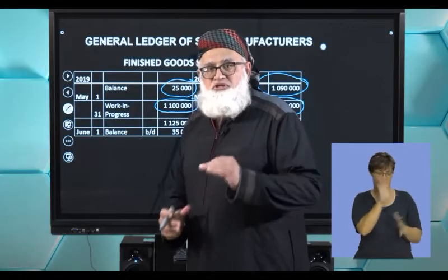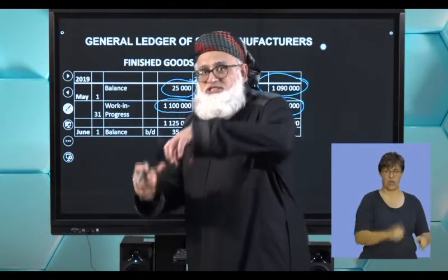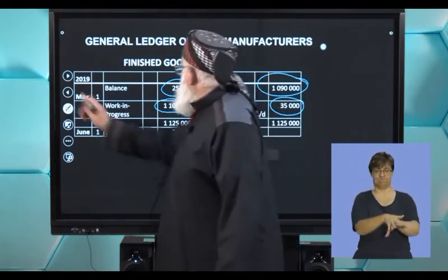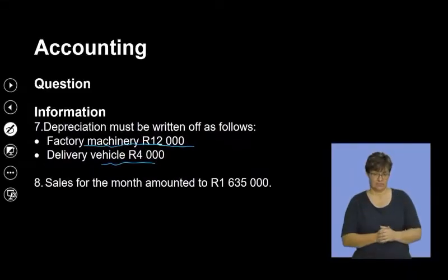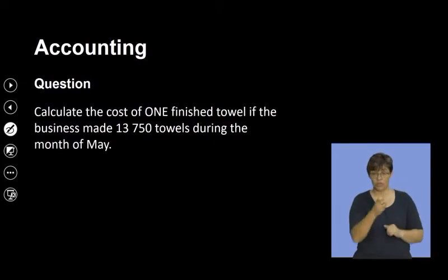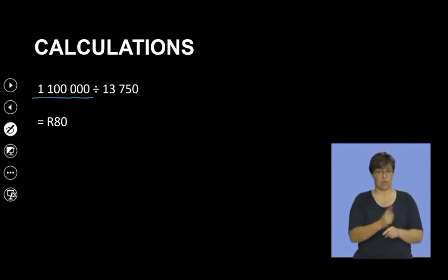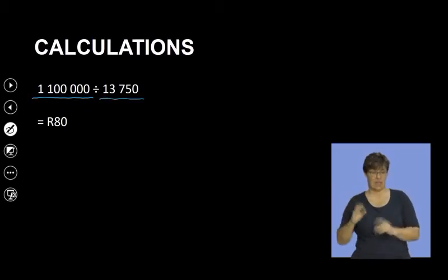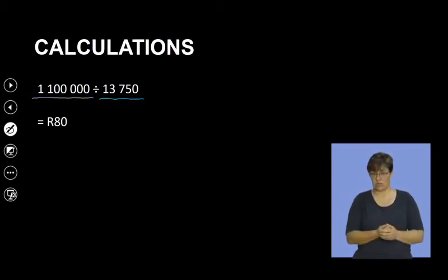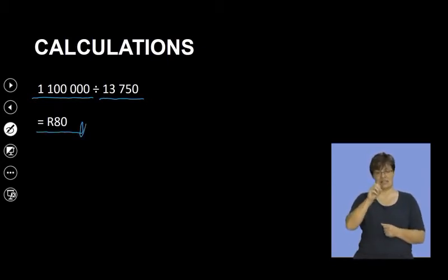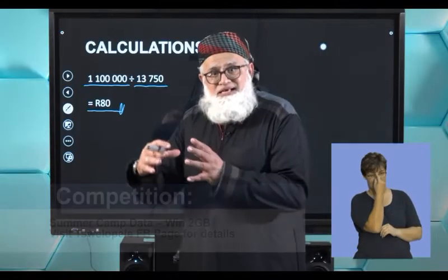In the finished goods stock account, the opening balance is given, the closing balance is given, and you bring in your work in progress. Voilà — your cost of sales becomes the missing figure. You can see the link between these accounts: work in process flows into the finished goods stock account. The last calculation was the cost of one finished towel: cost of production 1,100,000 divided by units manufactured 13,750 gives a unit cost of 80 rand per towel.